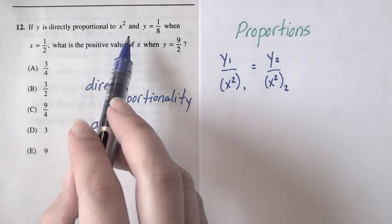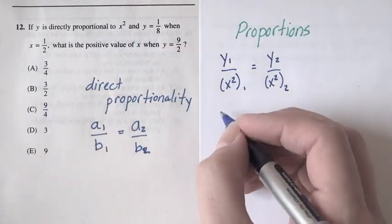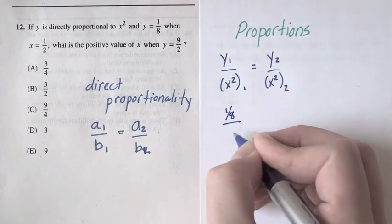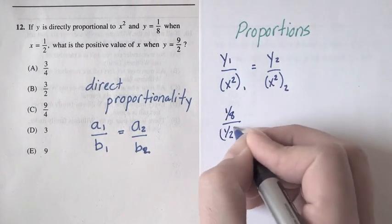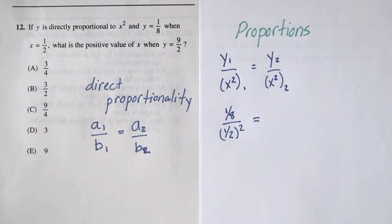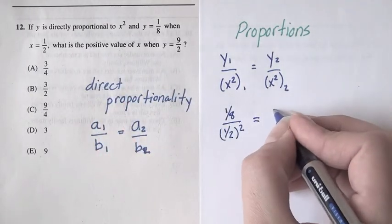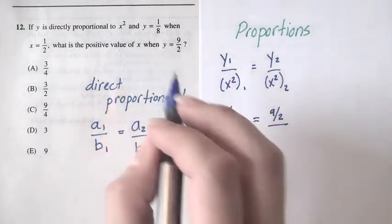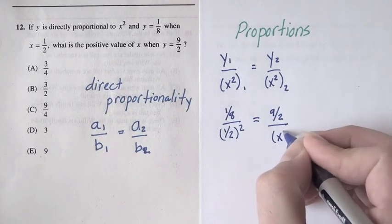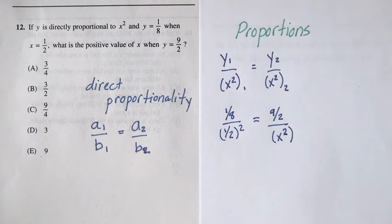Our first pair of y's and x's that we're given is y equals one-eighth and x equals one-half. So that relationship is that one-eighth over one-half squared has got to be equal to our second set of x's and y's. We know that the second y is nine-halves, and what we don't know is the second x. Remember, it's x squared that's part of the proportionality. So that's the correct setup.